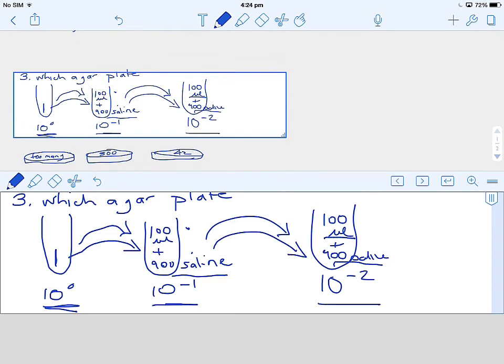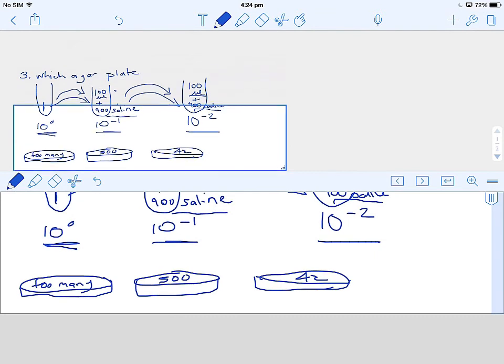So what do we do with these test tubes? Let's move down to some agar plates. If we take 100 microliters from the first tube and put it onto this agar plate, we'll have far too many colonies to count. If we take 100 microliters from our second test tube and put it onto an agar plate, the result was 300 colonies. That's likely to be inaccurate because there are far too many counts.